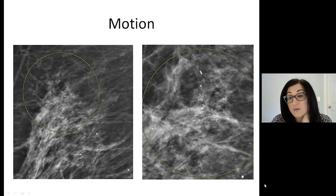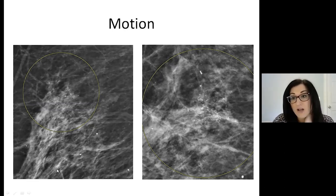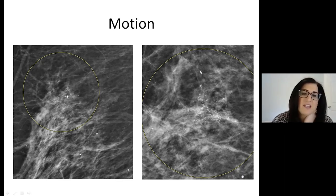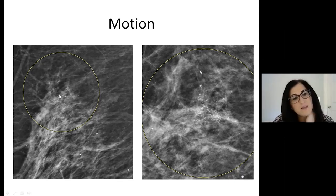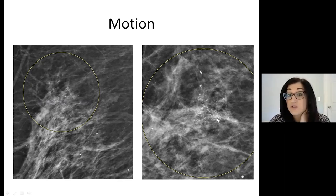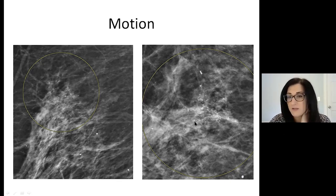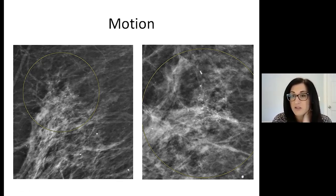This is an example of motion — if you don't compress the patient enough, they can move and you can get respiratory or other motion. We can clearly see there are calcifications here, but it doesn't look like that many, and it's hard to tell their morphology — they look kind of amorphous. When we redo this to correct for the motion, now I'm very concerned. These are pleomorphic calcifications — there are over double the number I thought there were before. This is all because of motion, which can degrade the ability to adequately diagnose suspicious findings.